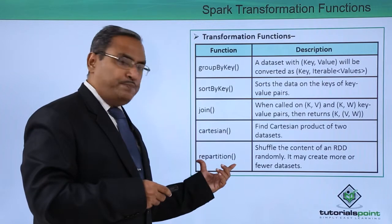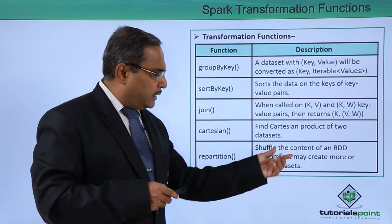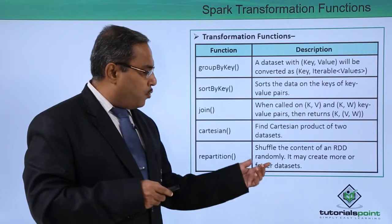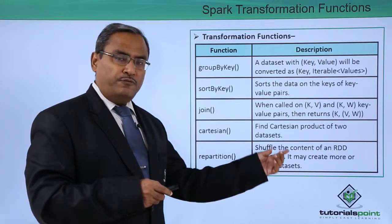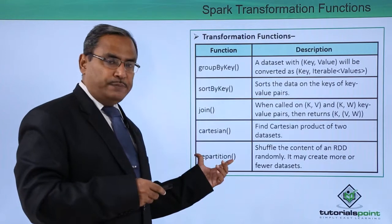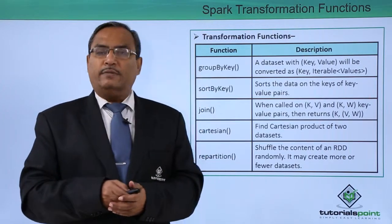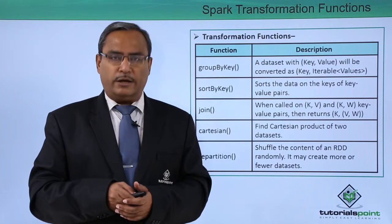Next one is the repartition and shuffle the content of an RDD randomly and it may create more or fewer datasets and that is known as the repartition. These are the different component functions which are available in our transformation on RDD.